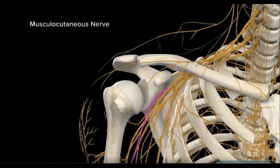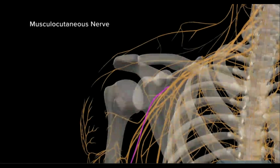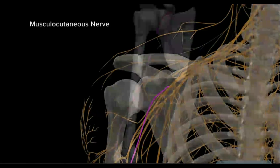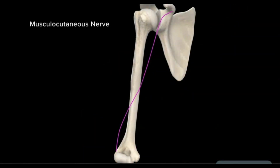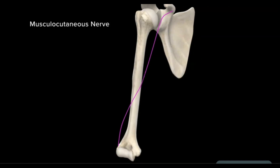The musculocutaneous nerve arises from the lateral cord of the brachial plexus, courses anteriorly and distally, and penetrates the coracobrachialis muscle. It provides motor function to the coracobrachialis, the biceps brachii, and the brachialis.